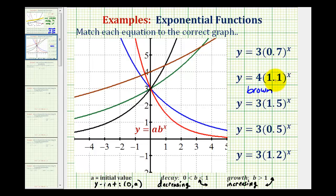Looking at the four remaining equations, let's find the two that represent exponential decay, meaning the value of b is between zero and one. The first equation has b equal to 0.7, and another equation has b equal to 0.5. Notice both have a equal to three, so they share a y-intercept of positive three, and both are exponential decay — going downhill from left to right.